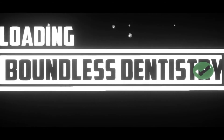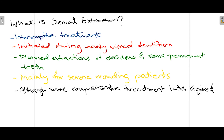So let's get started. What is serial extraction? Serial extraction is one of the interceptive treatments for orthodontic patients in which, during early mixed dentition — when some deciduous teeth are being exfoliated and permanent teeth are erupting — this treatment is initiated. Deciduous teeth and some permanent teeth are extracted so that the remaining permanent dentition can occupy their normal position in the arch.